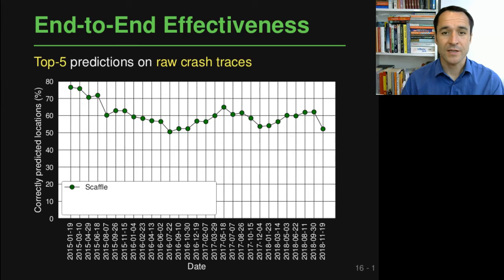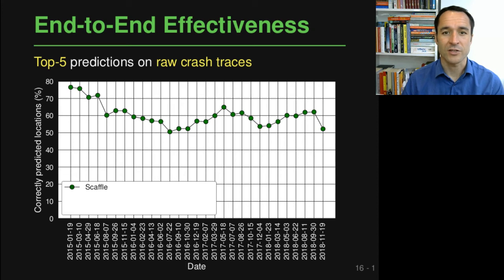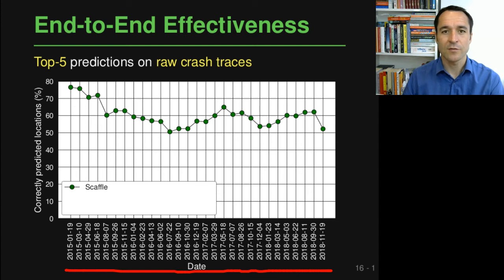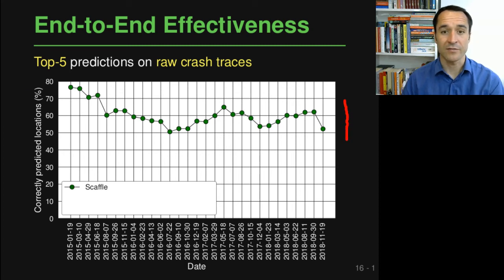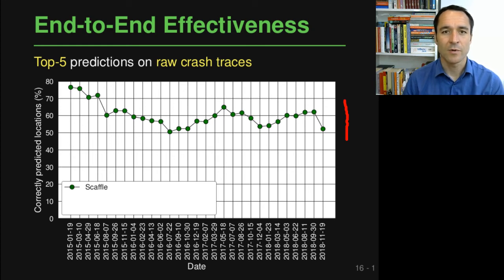The main result I want to discuss is the end-to-end effectiveness of Scaffle — how often it successfully predicts the right file or at least one of the right files that need to be changed to fix a crash. What you see is the effectiveness among the top five predictions given the raw crash traces. On the horizontal axis are all the different dates using 50-day steps, and on the vertical axis is the percentage of correctly predicted locations. Scaffle's effectiveness varies a bit depending on the 50-day window but overall is in the 60% plus or minus a few percent range.